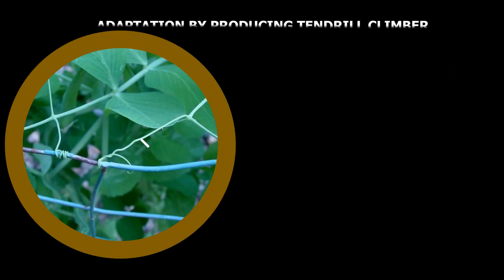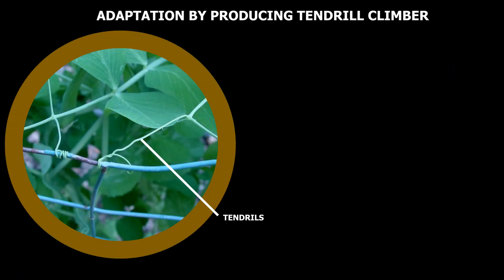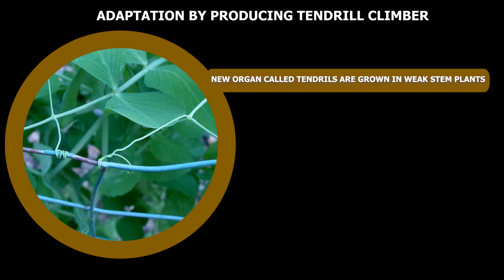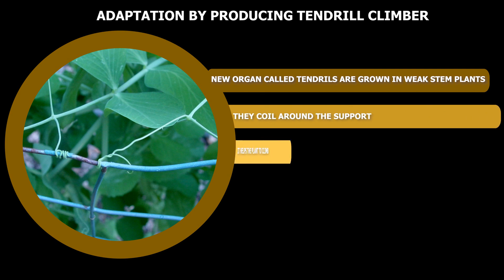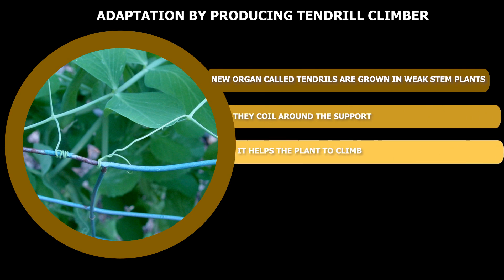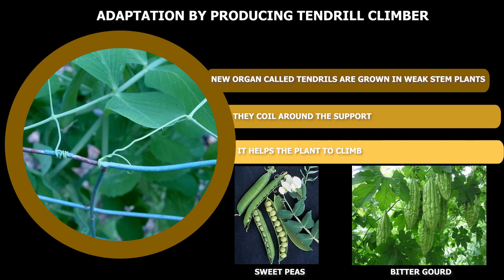Adaptation by producing tendril climbers. In some weak stem plants, a new organ called tendrils are grown to provide support. Tendrils coil around a support and help the plant to climb. For example, in sweet peas leaflets are modified into tendrils, and in bitter gourd auxiliary buds are modified into tendrils which helps it climb.